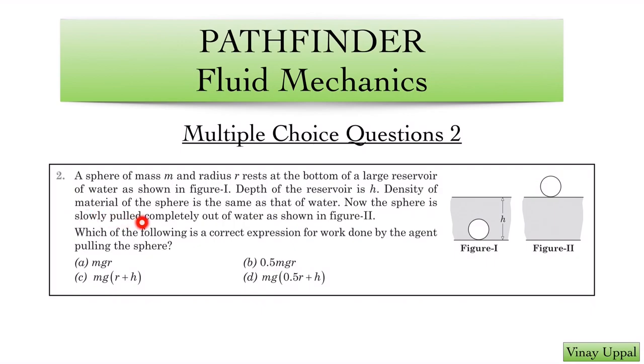Density of the material of the sphere is the same as that of water. The sphere is slowly pulled completely out of water. Two important points given in the question is that the density is same of the sphere and water and it is slowly pulled. That is key information that we are going to use in the solution.